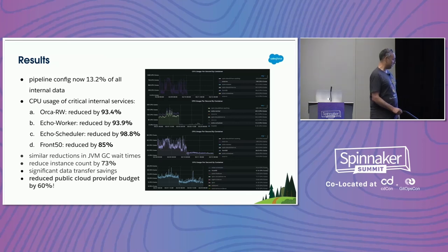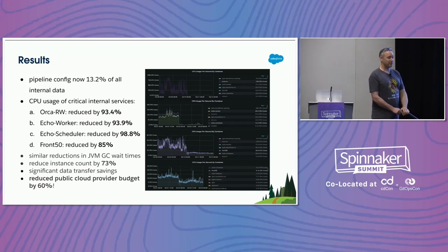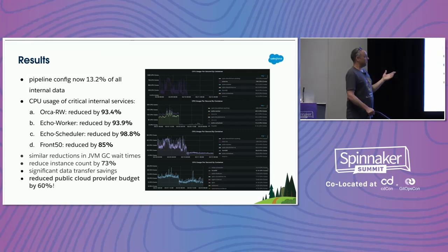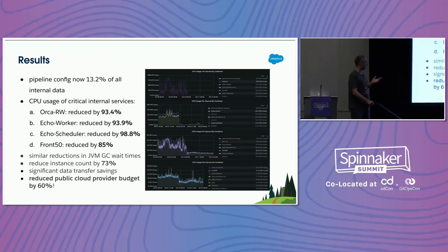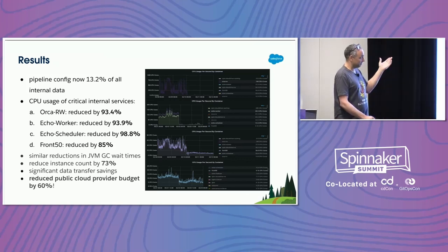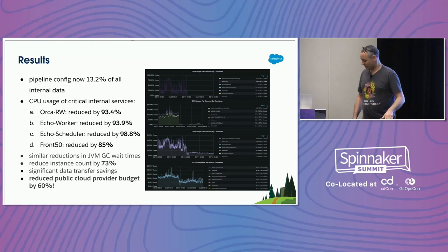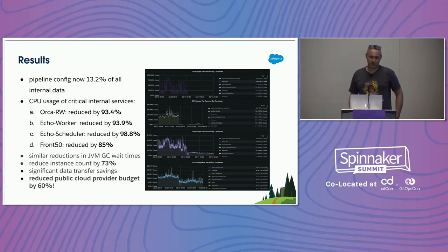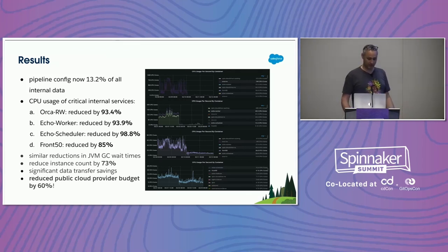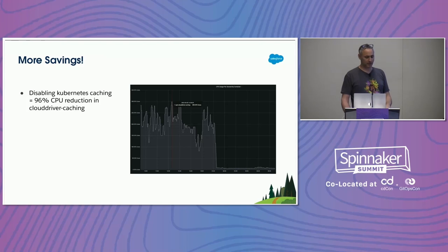Instance counts went way down, everything went down. It's still an annoyingly big number — 13% of all traffic in Spinnaker is still this one thing — but it's not 93.5%, it's only 13%. I can think of ways to make it smaller, like shipping deltas instead of all the things, but we stopped caring because this was pretty cool. Version 1.31 has all this, defaulting to off, and we'll get it turned on by default — probably in 1.32.